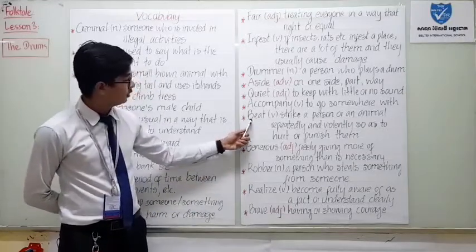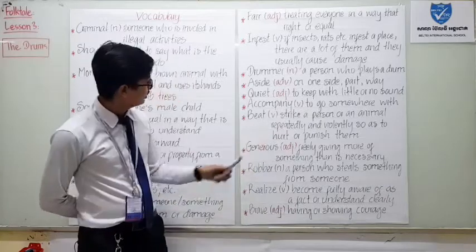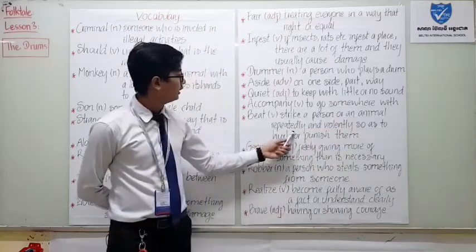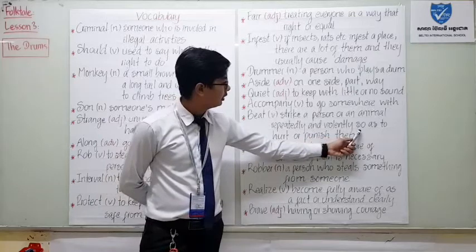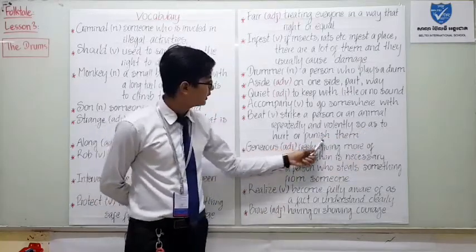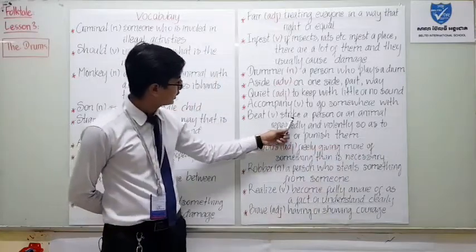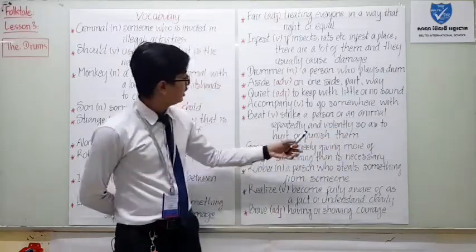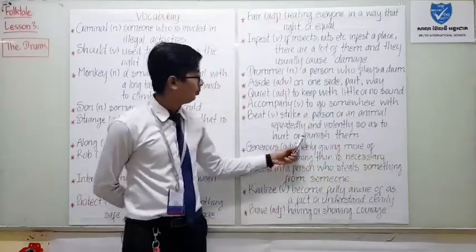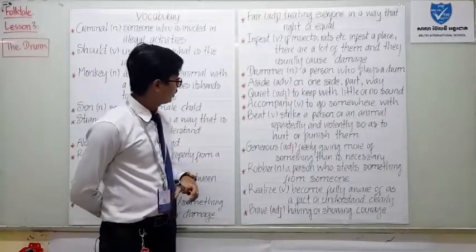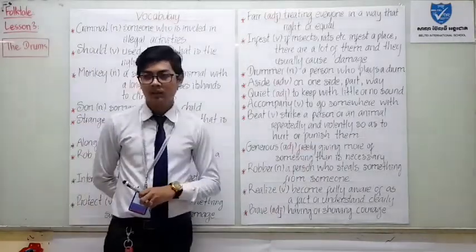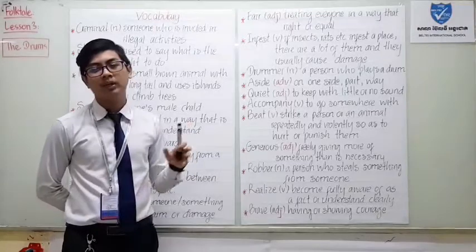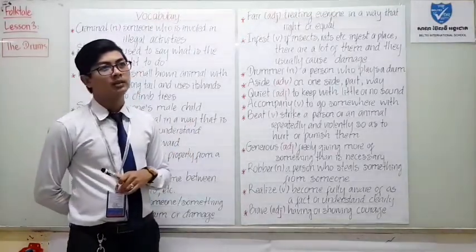Next word is 'beat.' Beat. Function: verb. Meaning: to strike a person or an animal repeatedly and violently in order to hurt or punish them. For example: 'Mr. Sok always beats me at football.'